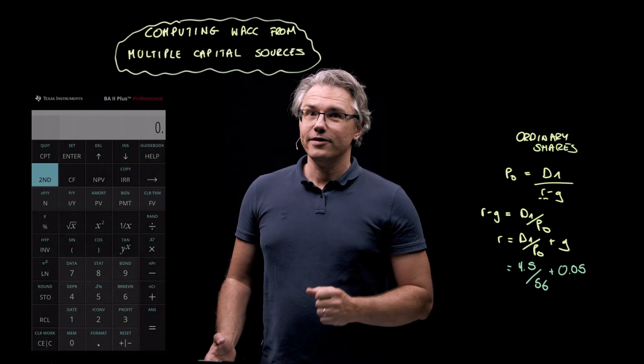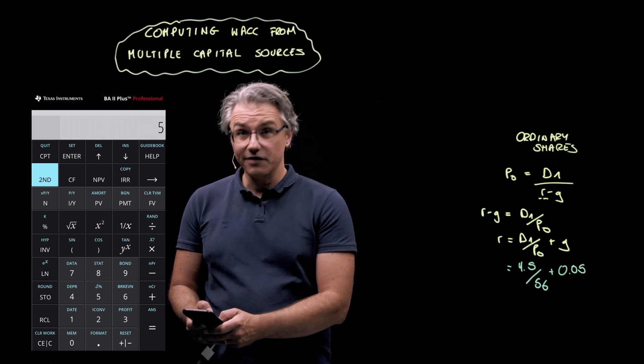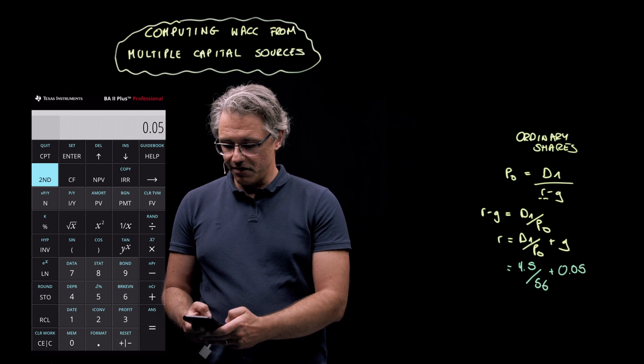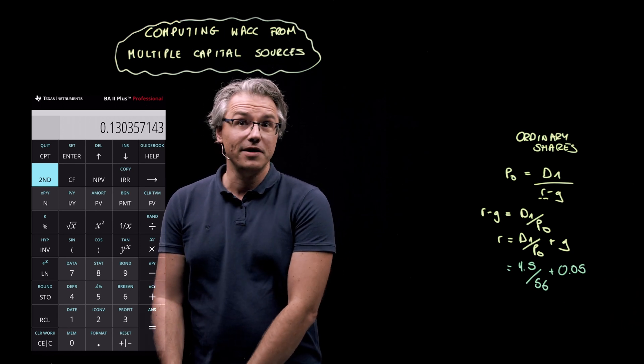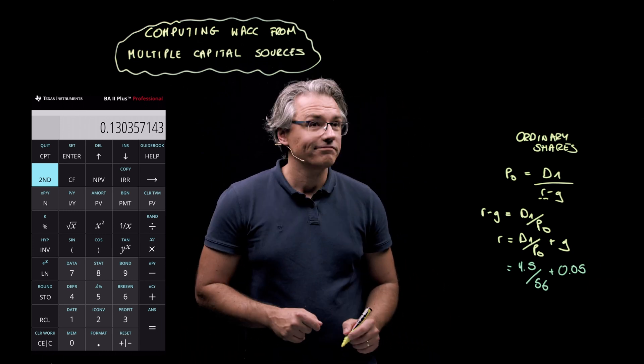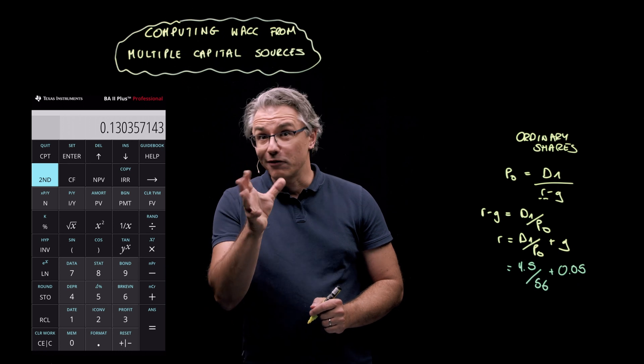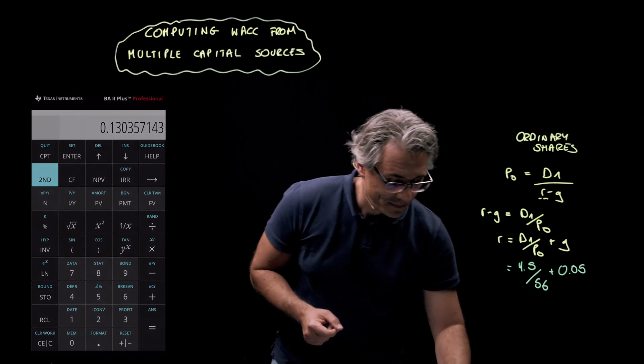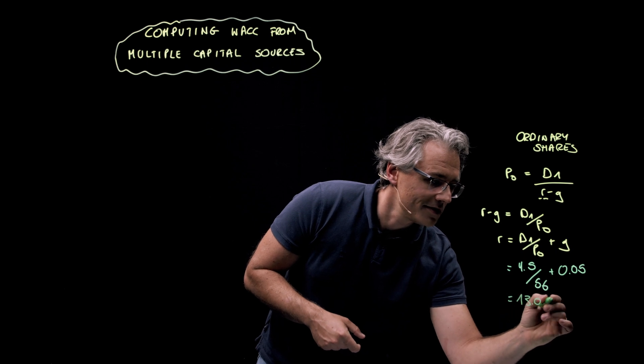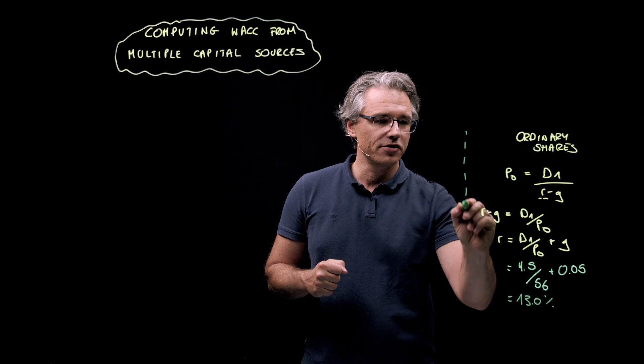Let's do this on the calculator. So, we've got four and a half divided by 56 plus 0.05. And that gives me a result of roughly 13% if we round it to one decimal mark. 13.0%, and that's the cost of ordinary shares.